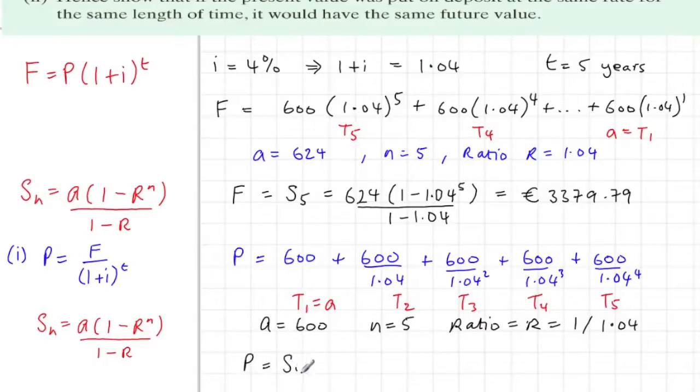So we just sub these carefully into the formula, so the present value is the sum of these 5 terms. So summing these things into the calculator and just be very careful with your brackets. And if you do that correctly, the answer to this is 2777.94.